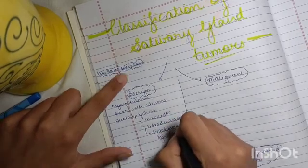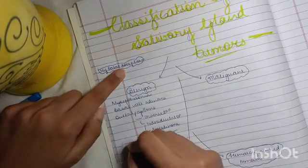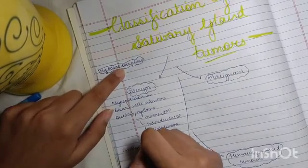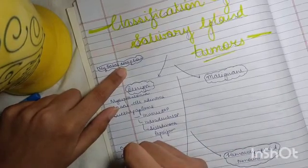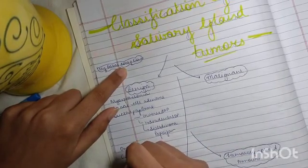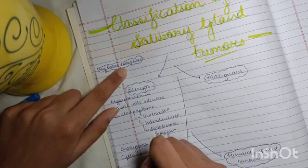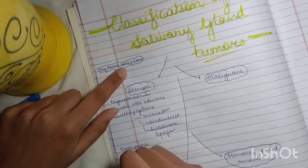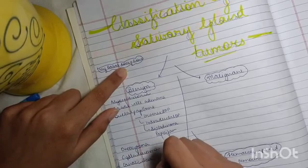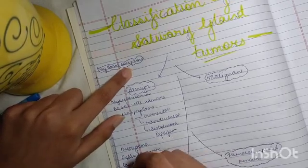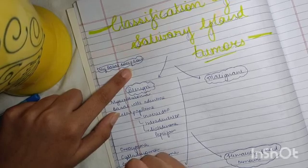Now by 'O,' you have to remember onchocytoma. By 'C,' remember cystadenoma. By 'S,' you can remember the sebaceous adenoma.